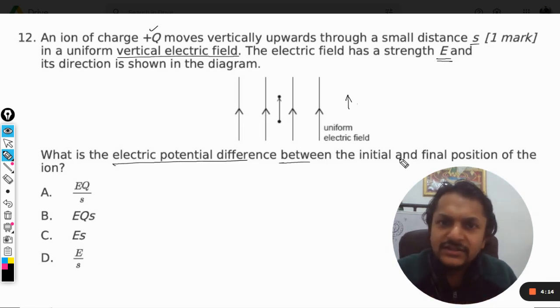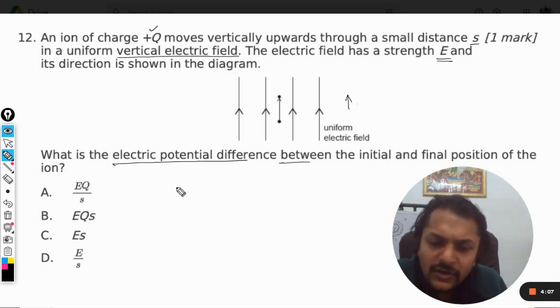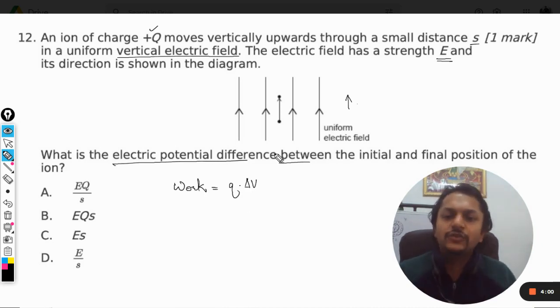Okay, so my dear students, whenever we are concerned with the potential difference, there is only one particular formula that comes to my mind. What is that? Work done. Very simple. The formula for the work done is Q into delta V.